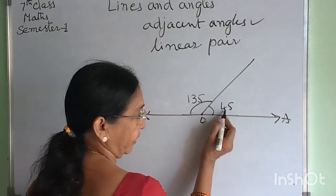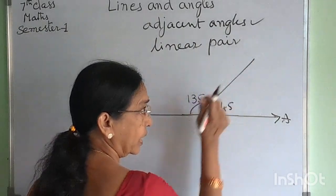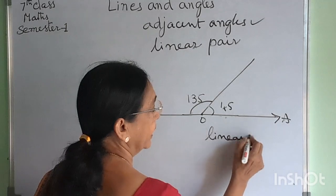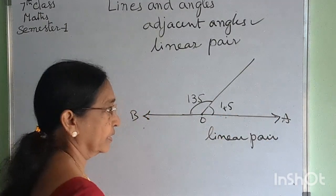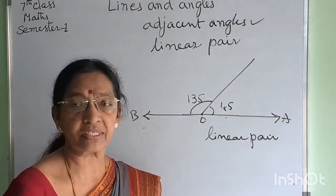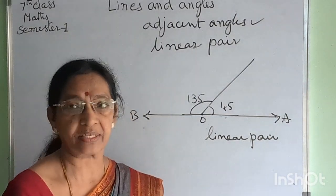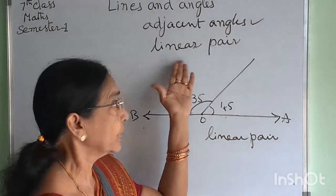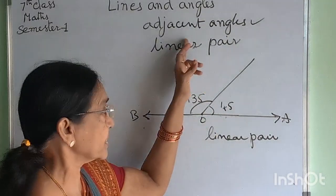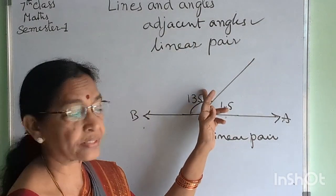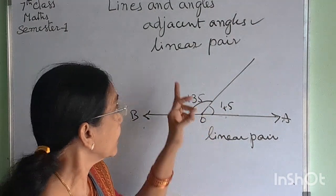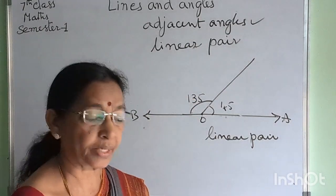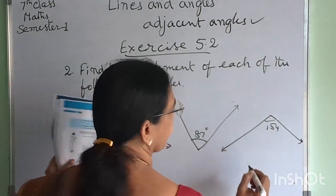So 135 and 45 are a linear pair because they are adjacent angles. If two angles are supplementary to each other, then those two angles are called a linear pair.